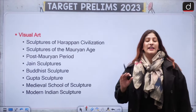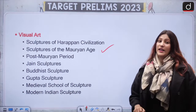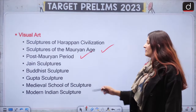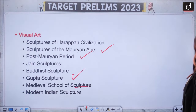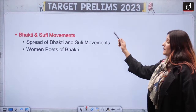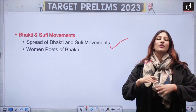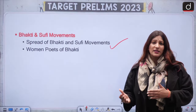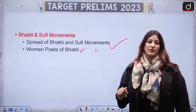In Visual Arts, very importantly, learn about the sculptures of the Harappan civilization and modern age. In the post-modern period we have Jain sculpture, Buddhist sculpture, Gupta, Medieval school of sculpture, as well as Modern Indian sculpture, in which Gandhara, Mathura, and everything will come. In Bhakti and Sufi movements, cover the spread, when did they originate, the time span, and who were the important names. Women poets — pay special attention to this.